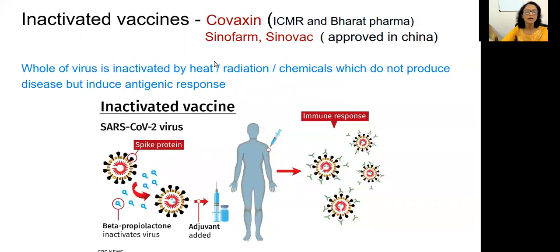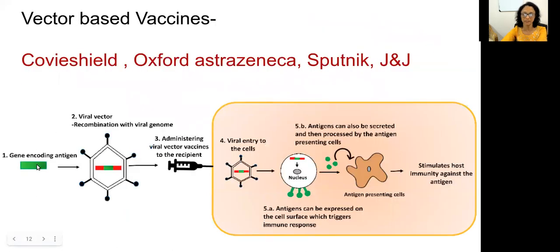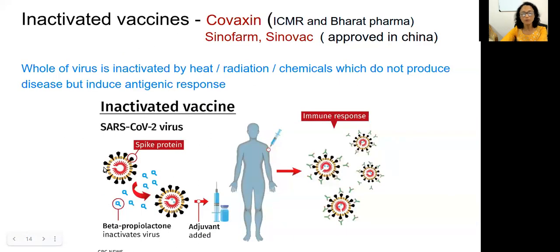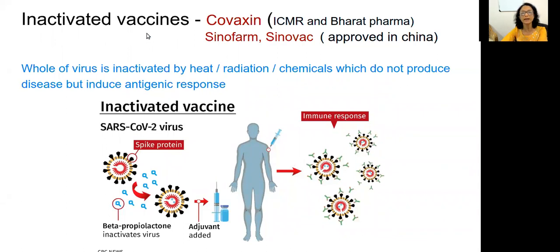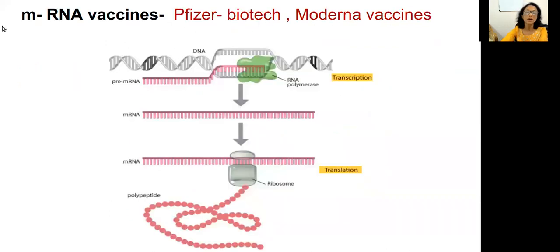The second type is the inactivated vaccine, used in Covaxin, Sinopharm, and Sinovac. Here, the whole virus is utilized in vaccine formation — not just a specific gene. The whole virus is inactivated by heat, radiation, or chemicals and then constituted to form the vaccine. When injected into human cells, the body accepts it like a natural infection and responds to form antibodies and memory cells. Covaxin is a type of inactivated vaccine.